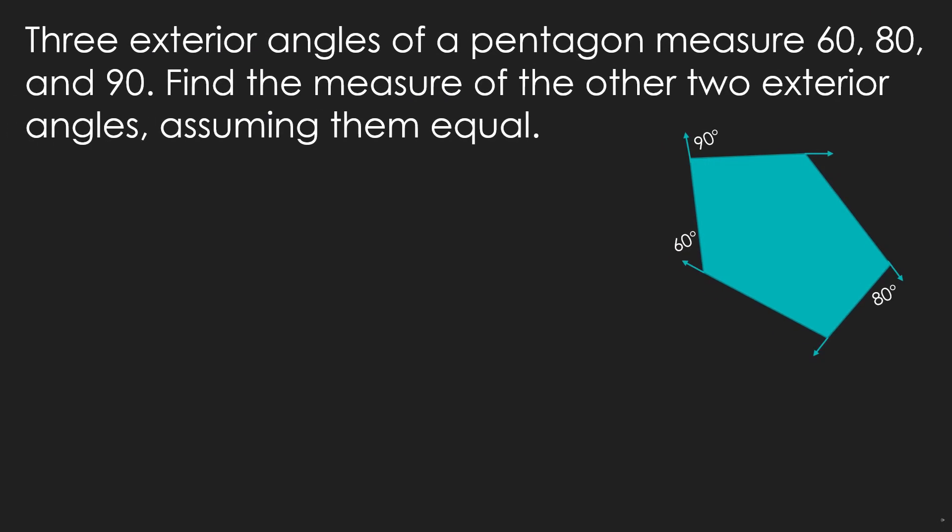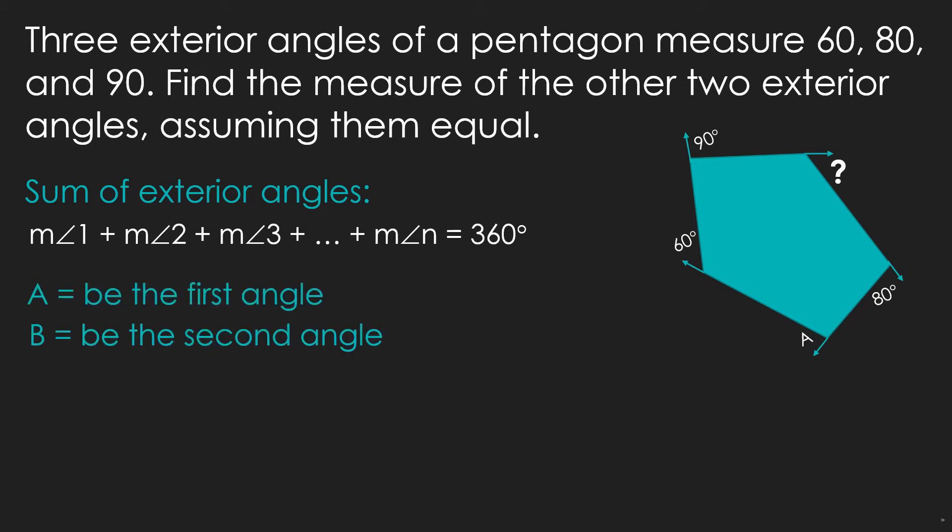Finally, we have this problem. The task here is to find the measure of two unknown exterior angles, which are equal, given the other three exterior angles. To arrive to our answer, we will use the concept of the sum of exterior angles, which says that it is always equals to 360 degrees. Now, let's say that the first angle is angle A, and the second angle is angle B. Now, take note that according to the given, these two unknown exterior angles are of equal measure. Then, mathematically, we can say A equals B.